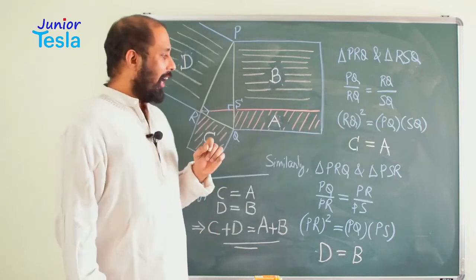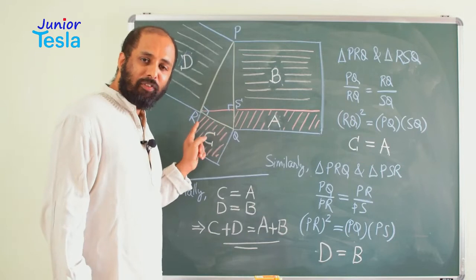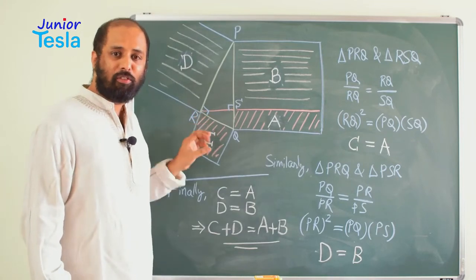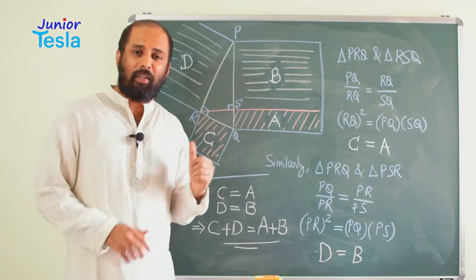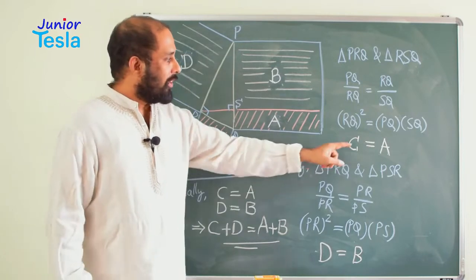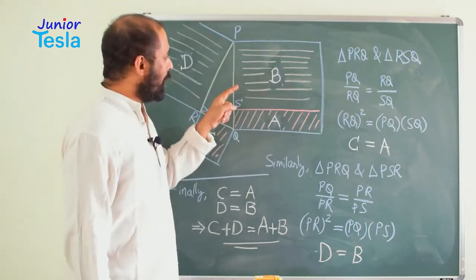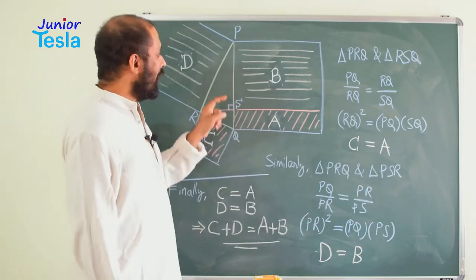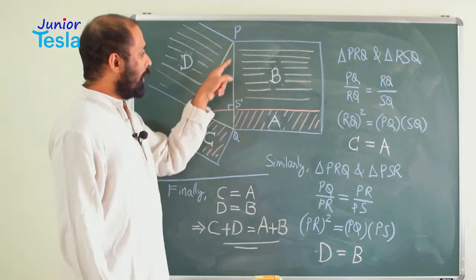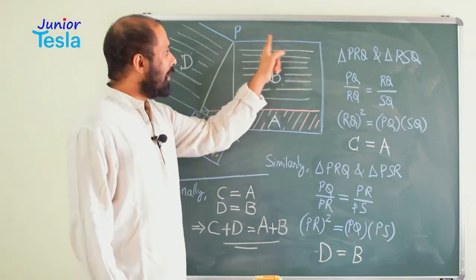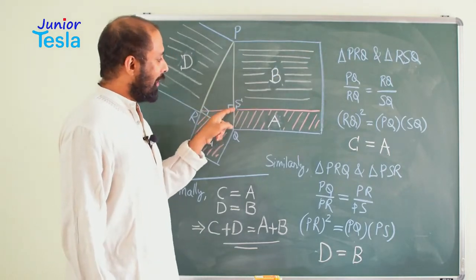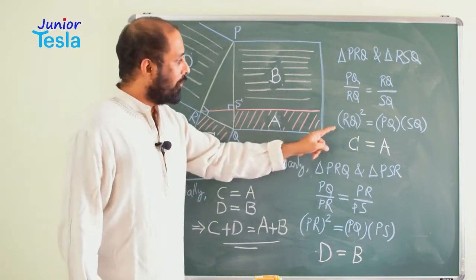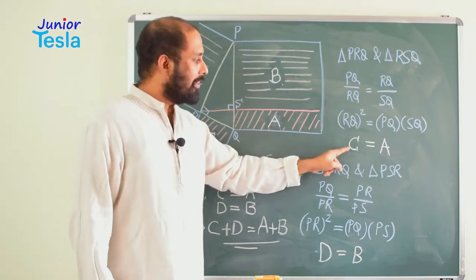Now what is RQ square here? RQ is the side of this particular square, so RQ square is nothing but the total area of this small square, which is denoted by the capital letter C. So C is equal to PQ into SQ. PQ is the hypotenuse length, and since this is a square, PQ equals this length as well. So this length into SQ is nothing but the area of this rectangle, which is denoted by A. From this relation, I can say C equal to A.